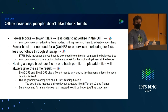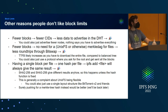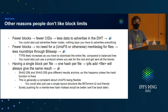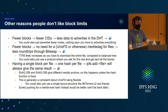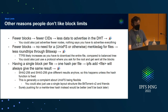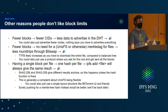Other reasons people don't like block limits, which are sort of not the real reason: if there were fewer blocks in the universe, there would be fewer CIDs, easing pressure on the DHT. But you could just advertise fewer nodes — no one's making you do it. Fewer round trips means no round trips through BitSwap because I don't have to walk multiple layers. But you could use a protocol that allows you to give it a root and get the whole graph instead of BitSwap.